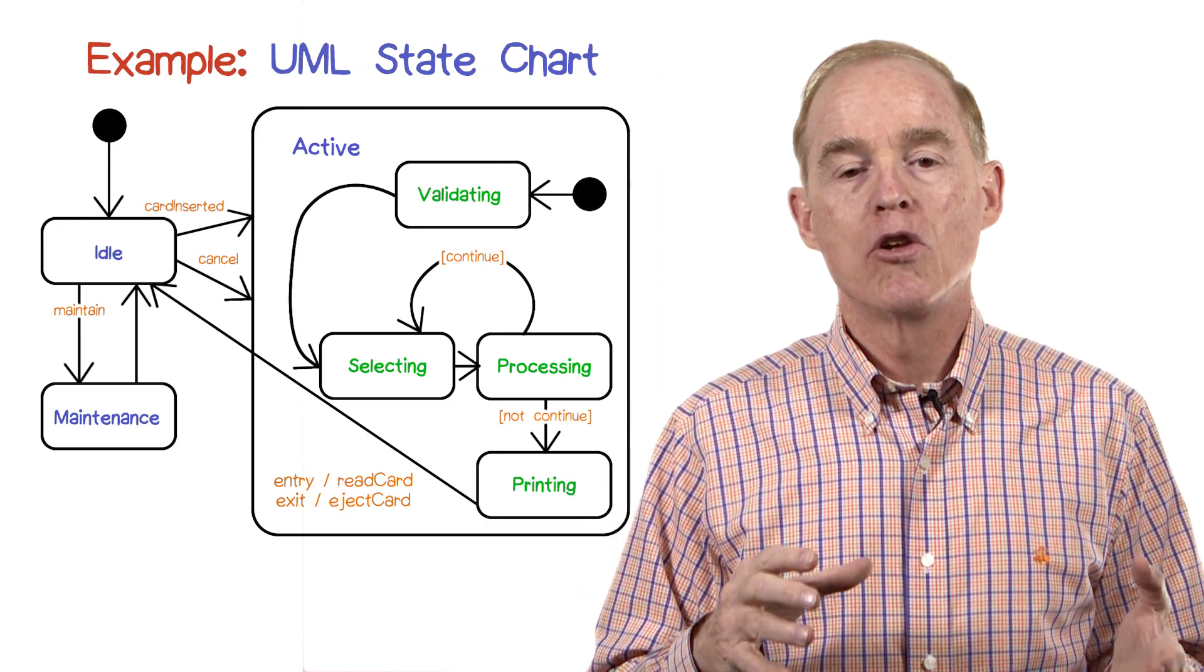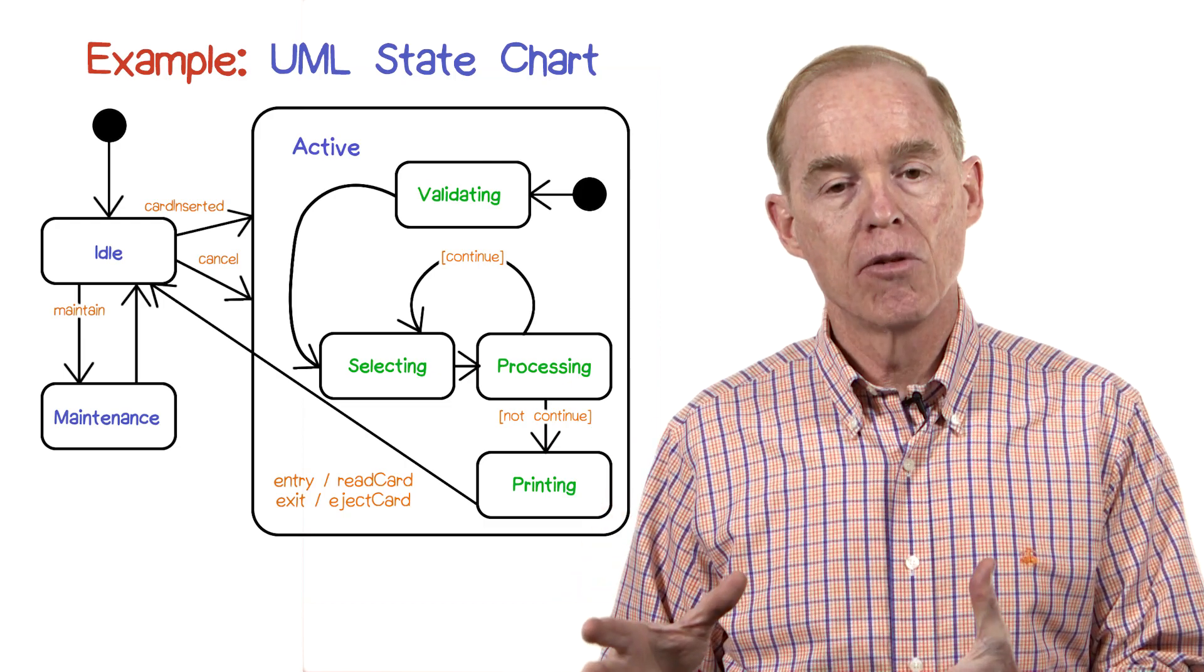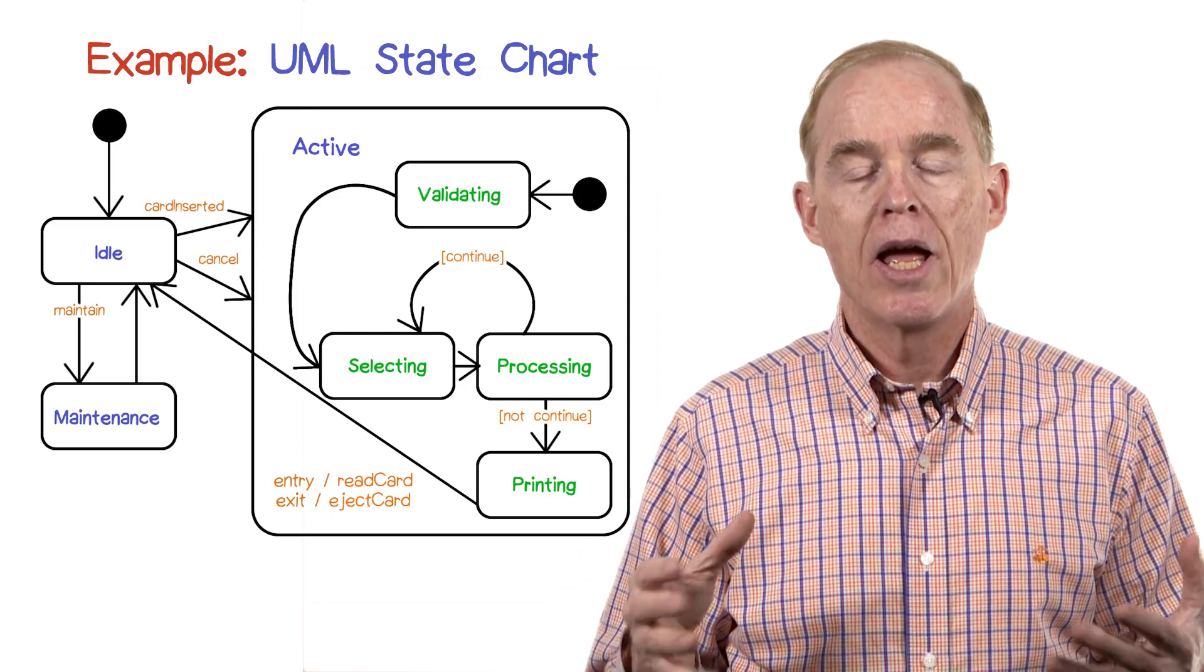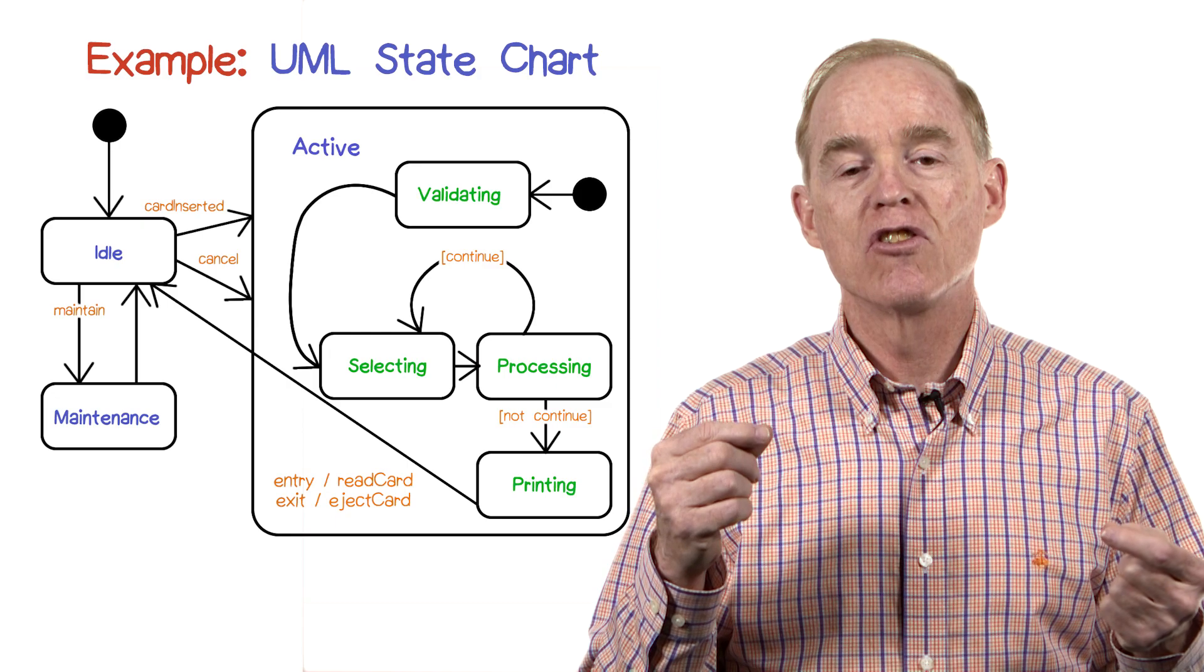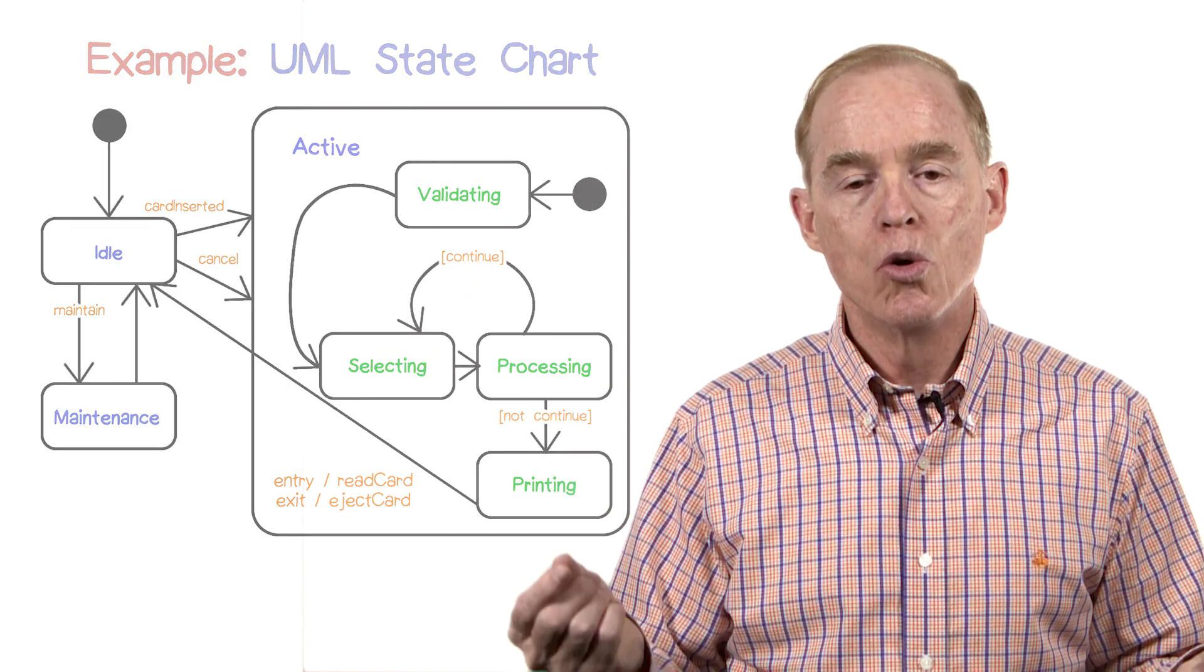There are transitions from idle to the boundary of active—two transitions there—and as we saw similarly, each of those transitions is going to go to the default state in the internal machine, which is labeled validating.